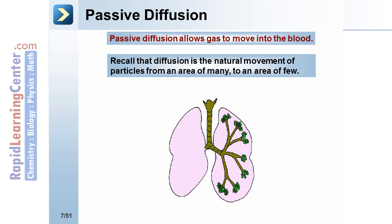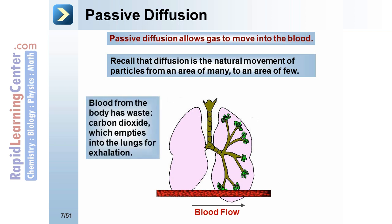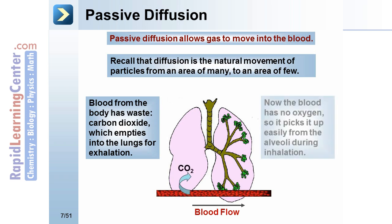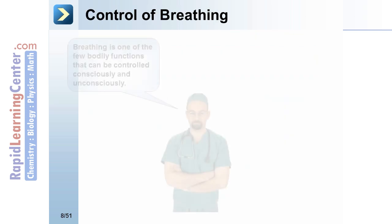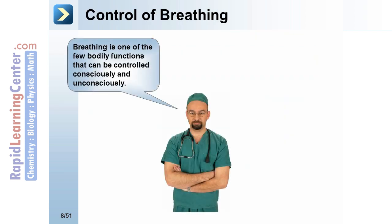Passive diffusion allows gas to move into the blood. Diffusion is the natural movement of particles from an area of many to an area of few. Blood from the body has waste — that's carbon dioxide — which empties into the lungs for exhalation. Now the blood has no oxygen, so it picks it up easily from the alveoli during inhalation.